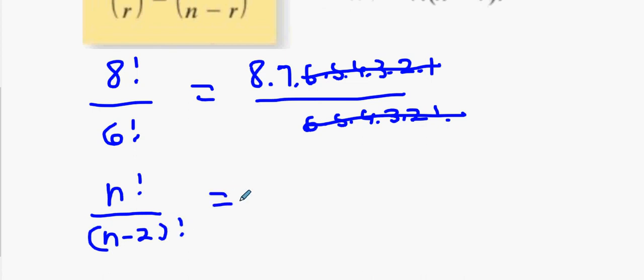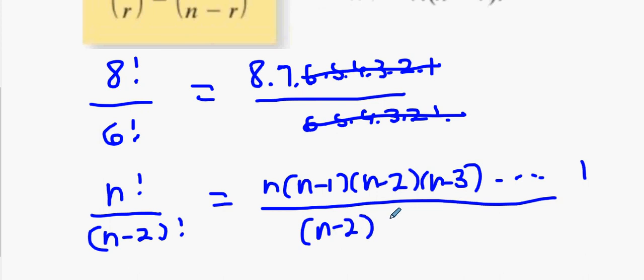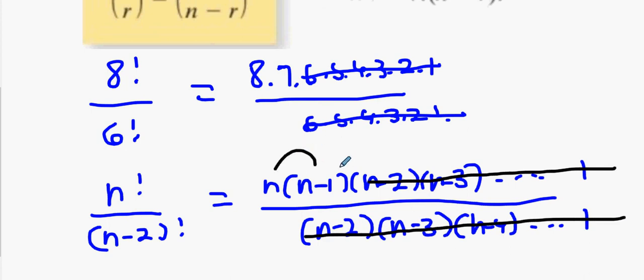Can anybody tell me what would n factorial divided by n minus two factorial be? What is n factorial? It's n, same way with those eights. And then what happens after eight? You go down one, don't you? So, it will be n multiply by n minus one multiply by n minus two, all the way down, isn't it? All the way down to the number one. And what would n minus two factorial be? Is everybody happy with that? What would cancel there? What cancels? n minus two downwards. And what's left on top? N times n minus one. Is that okay?